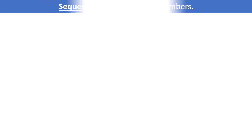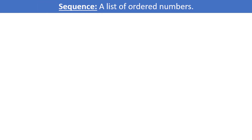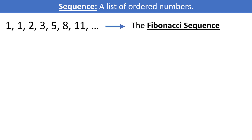Welcome, my friends. A sequence is a list of numbers in some specified order. For example, 1, 1, 2, 3, 5, 8, 11, ... is what is called the Fibonacci sequence, where each number, with the exception of the first two numbers, can be found by adding the previous two numbers together. The Fibonacci sequence shows up all over the place in nature and art.